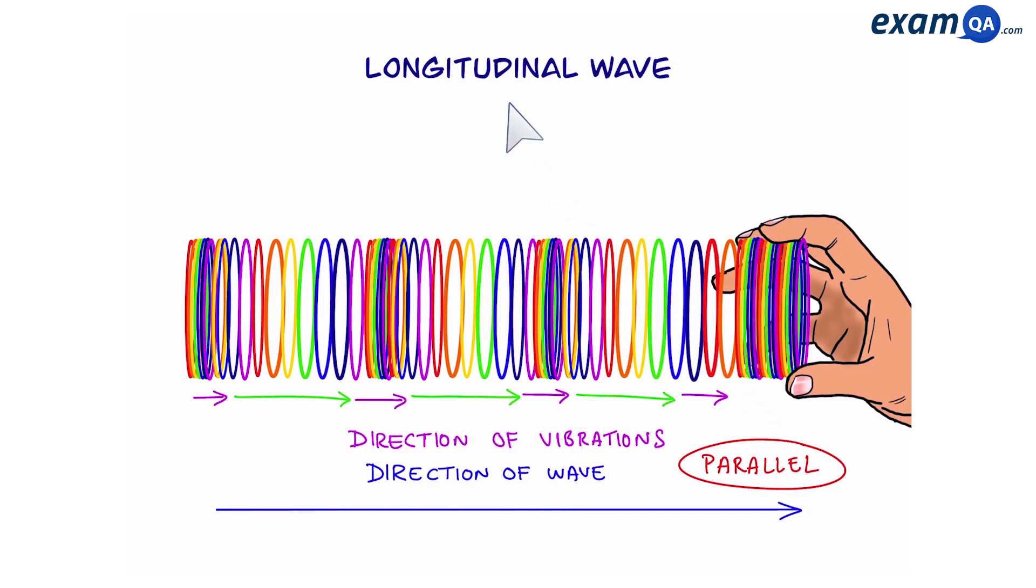So by definition, a longitudinal wave is when the direction of the wave and the direction of the vibrations are parallel, and examples include sound waves or P waves, which are a type of seismic wave, a wave that is created during earthquakes.